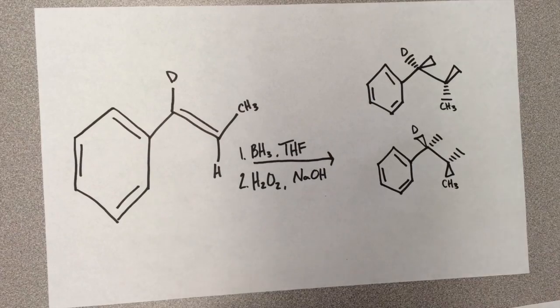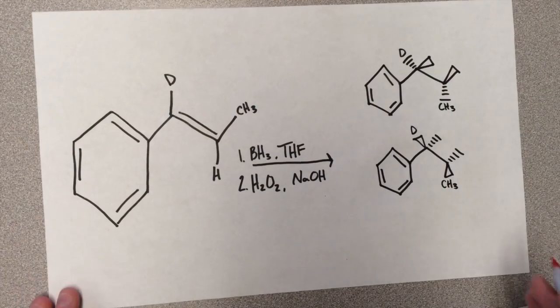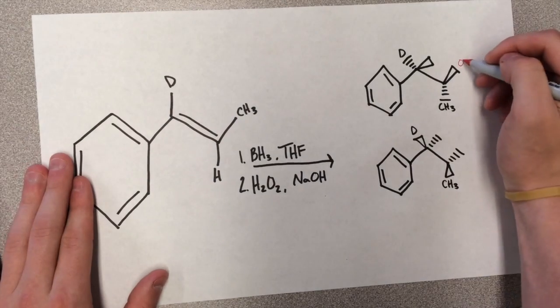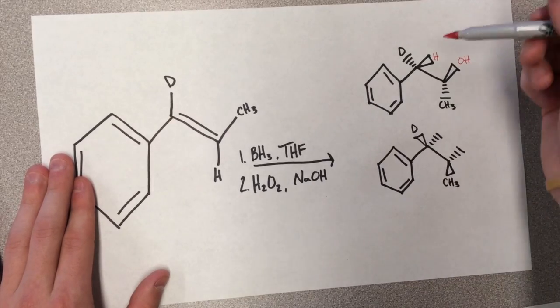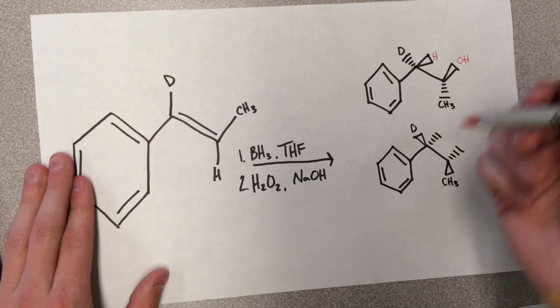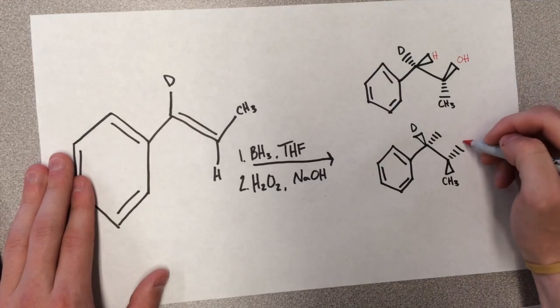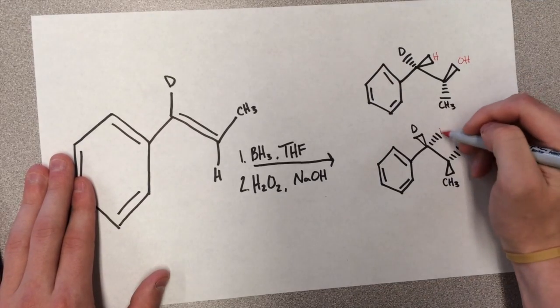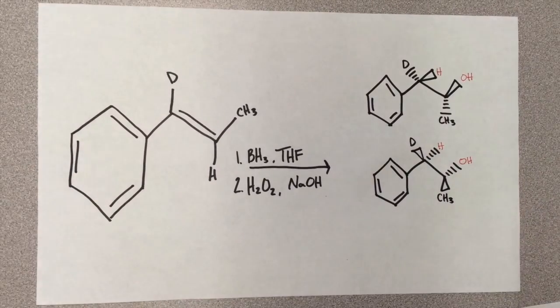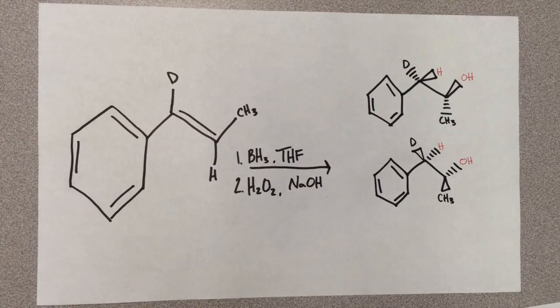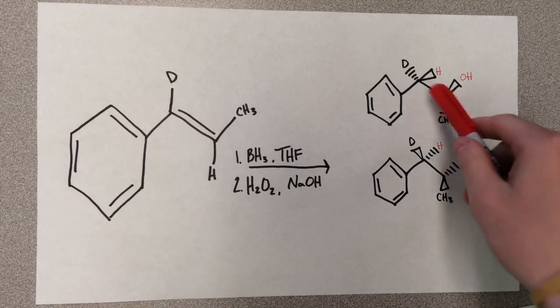So, in that, the stereochemistry is always going to be syn between the OH and the hydrogen. And we're just going to use deuterium to help distinguish the stereochemistry. So, these will be the only outcomes that you can see possible for this reaction, because they always have to be syn of each other.